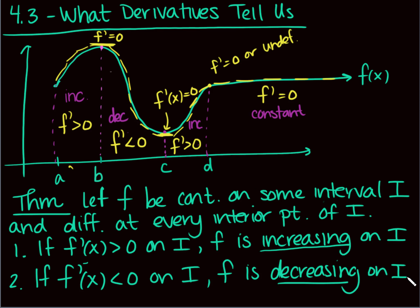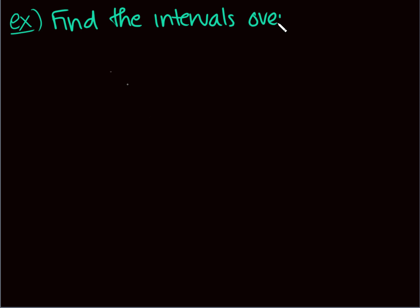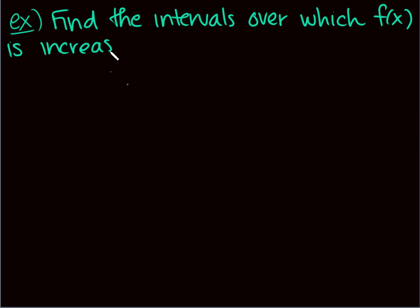What we're going to do is take a function and use the derivative to determine those intervals without actually having to sketch the function. We can graph it on Desmos or a graphing calculator to make sure the algebra and calculus we do matches the graph. If I can find the intervals over which our derivative is positive and negative, then I can find those intervals of increasing and decreasing.